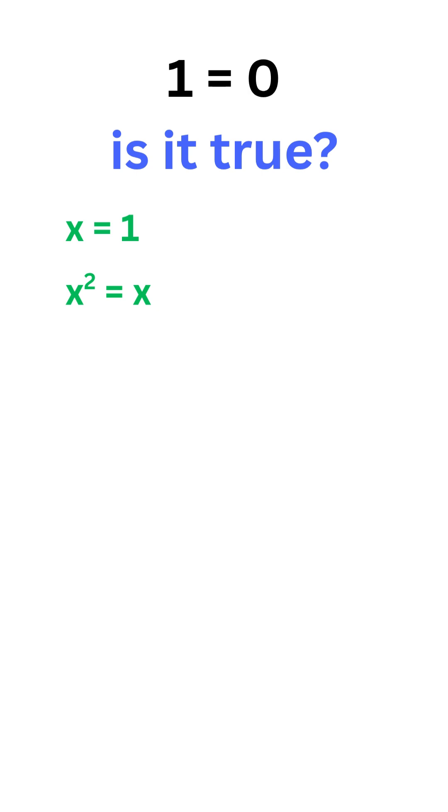Subtract 1 from both sides of the equation. We have x square minus 1 equals x minus 1.